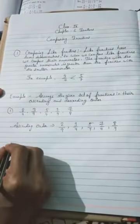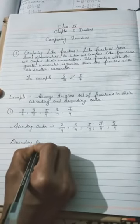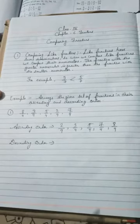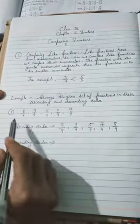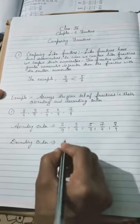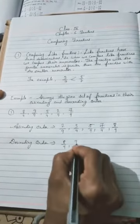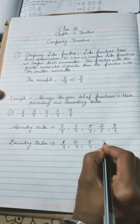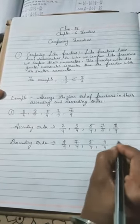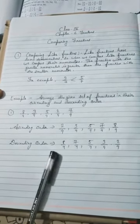Now convert into descending order. Descending order means big number to small number. The biggest is 8 upon 9, next 7 upon 9, next 5 upon 9, next 3 upon 9, and next 2 upon 9. This is called descending order.